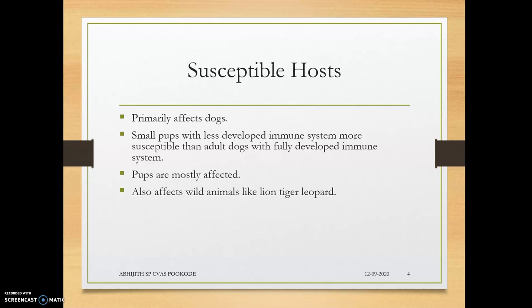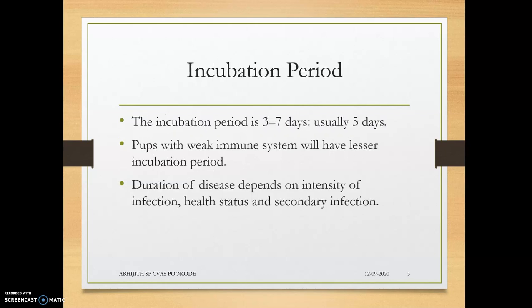Among dogs, pups are most affected because their immune system is still developing, making it a favorable environment for high-level multiplication of canine distemper virus. Pups with less developed immune systems are more susceptible than adult dogs with fully developed immune systems. The incubation period is three to seven days, typically five days, but depends on immune status, secondary infection, health status, infection intensity, and viral strain.